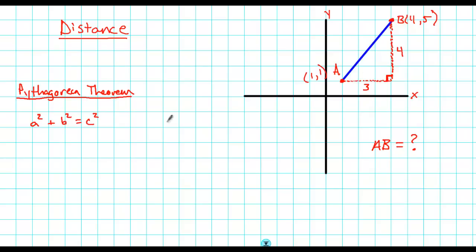So A in my right triangle is three. So three squared plus B is four, four squared equals C squared. And then I just work this out like you probably already know how to do. So three squared is nine plus four squared, which is 16, equals C squared. Nine plus 16 is 25.